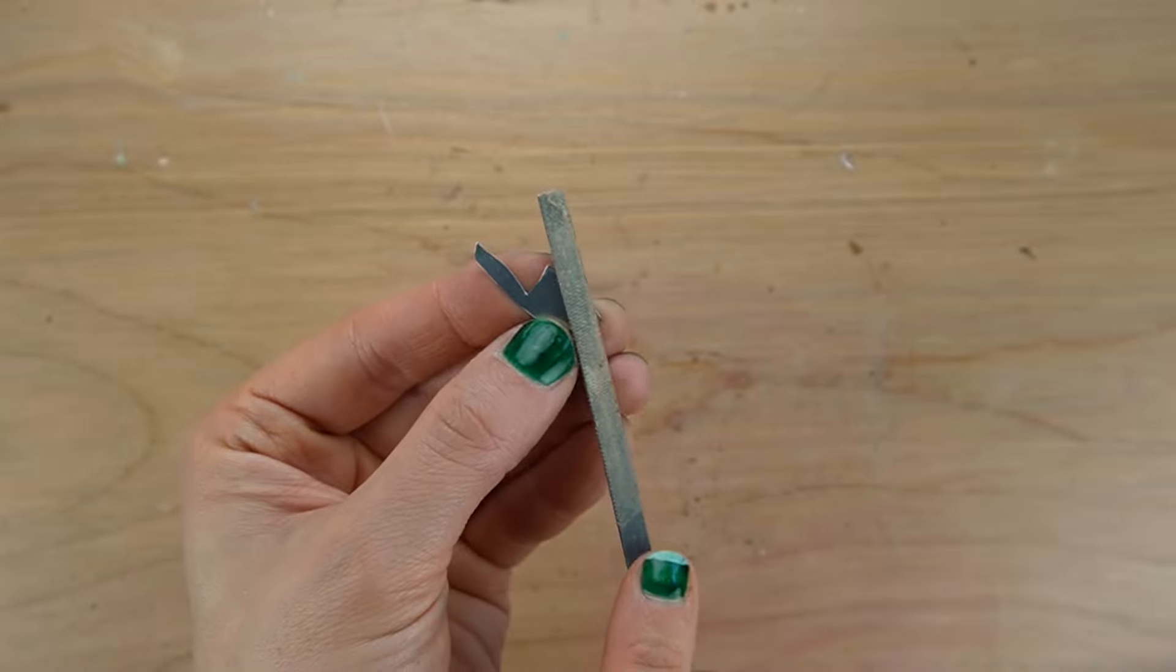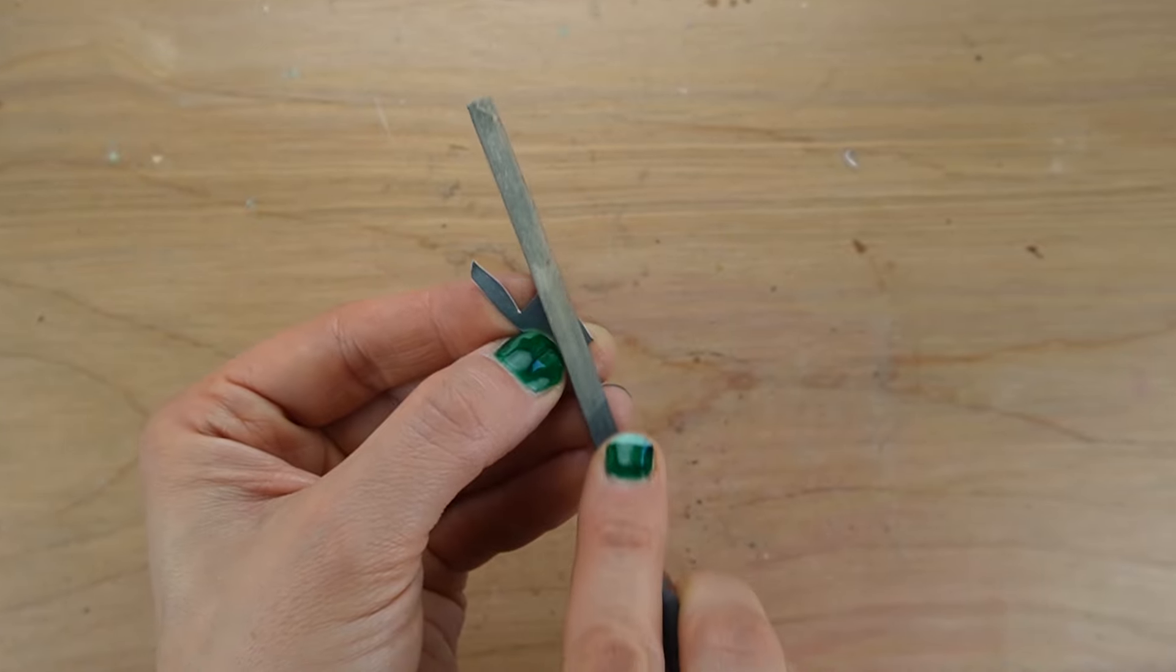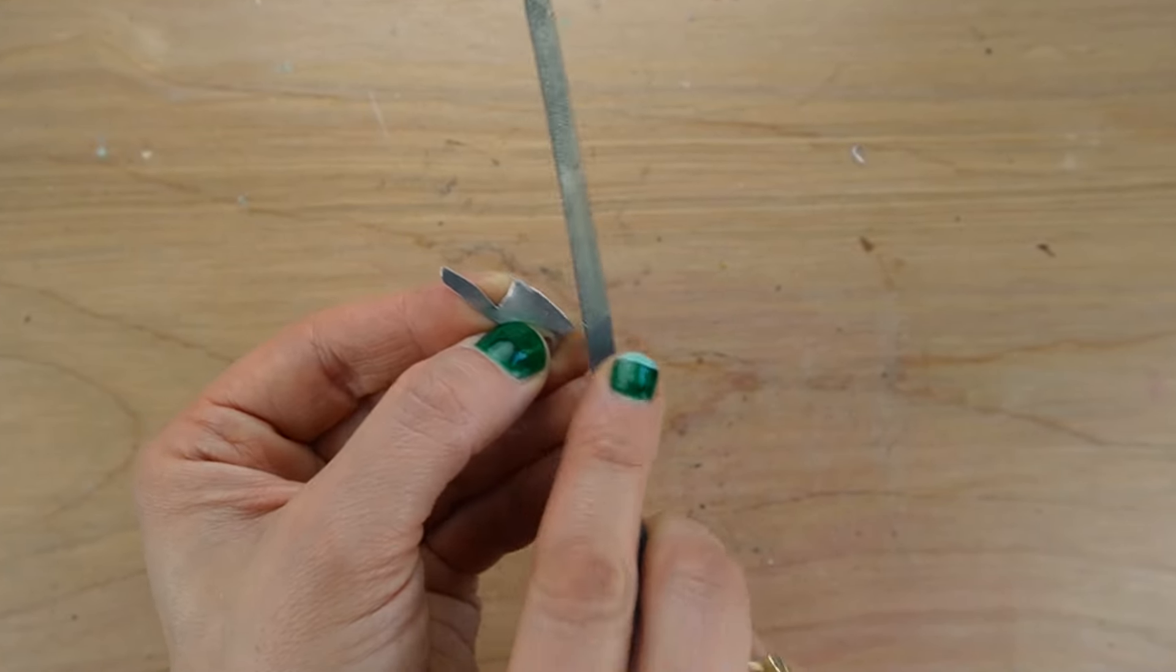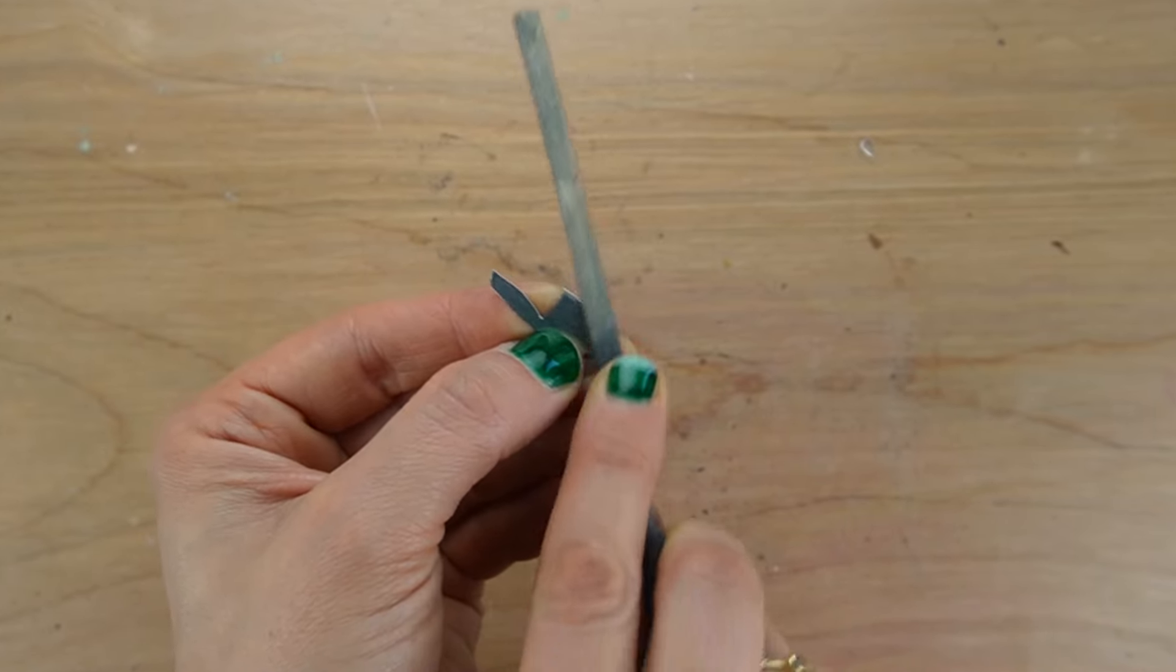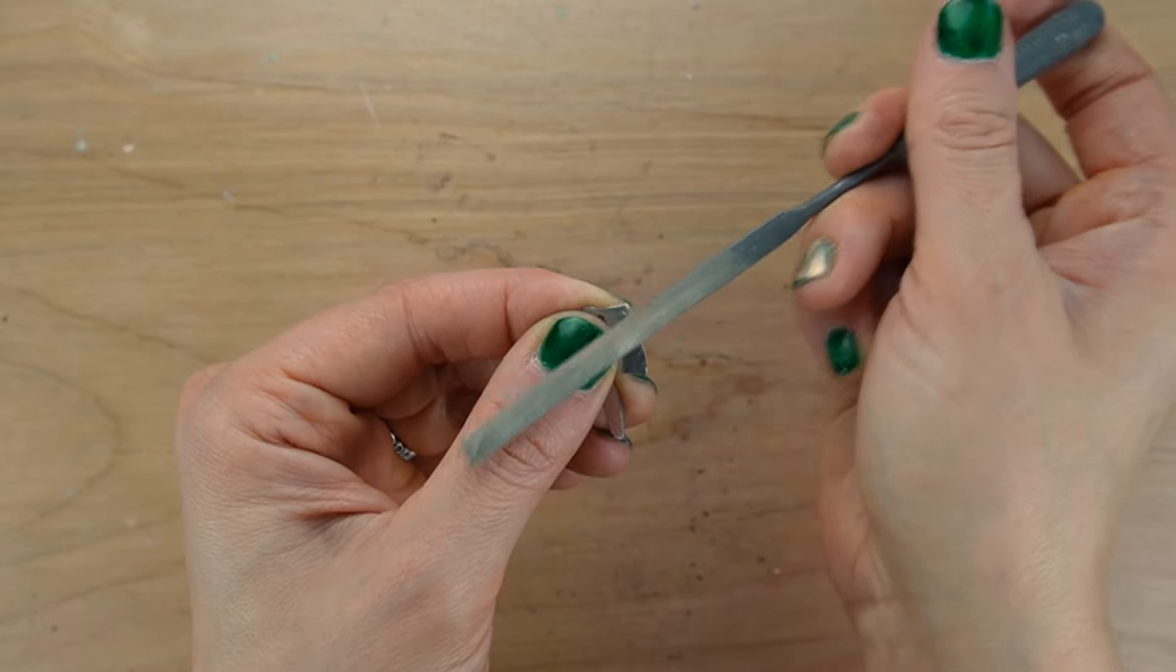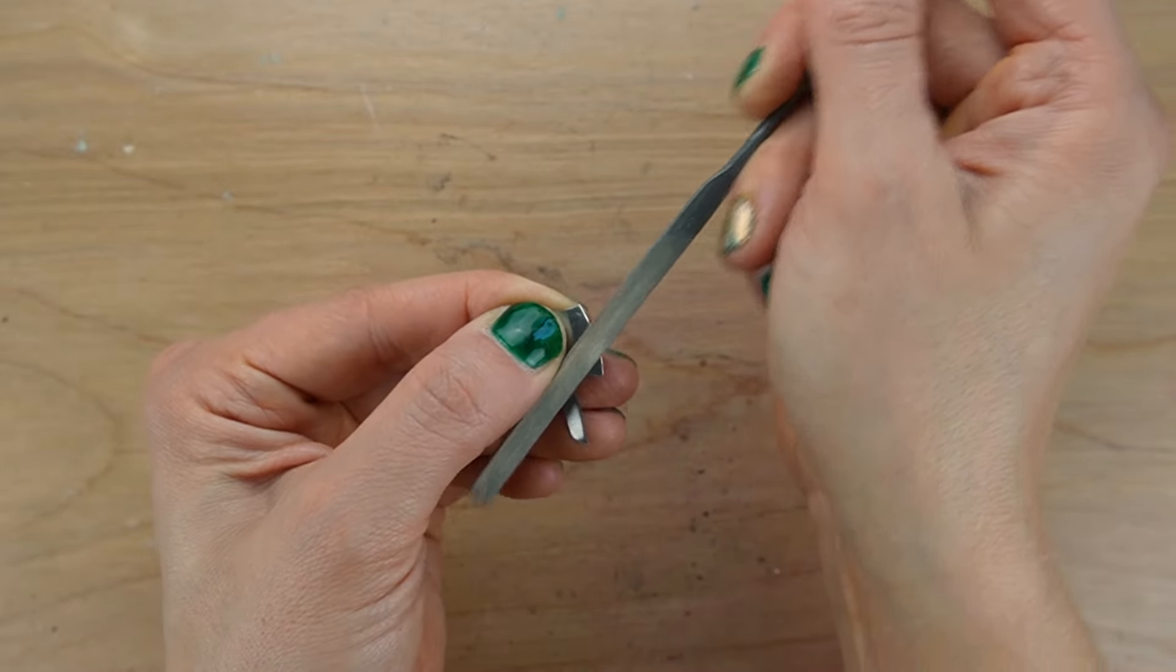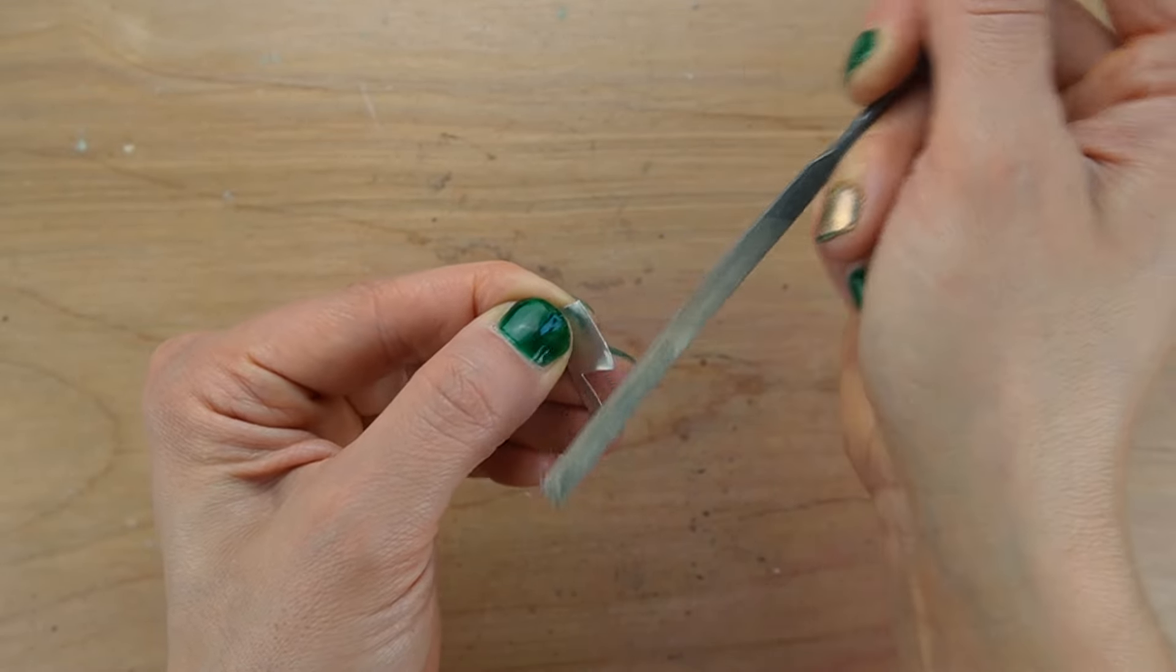This cut blunt edge doesn't look very realistic so I'm using a cheap flat file to create a slight bevel. This gives the illusion of a nice sharp cutting edge but this is still very dull. The particular metal I'm using never got sharp and dangerous but make sure your metal is reacting the same way so you don't cut yourself.